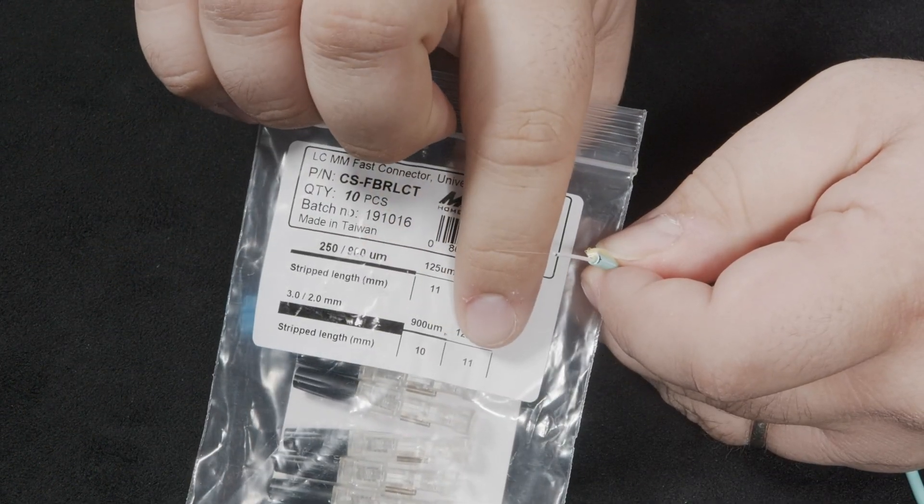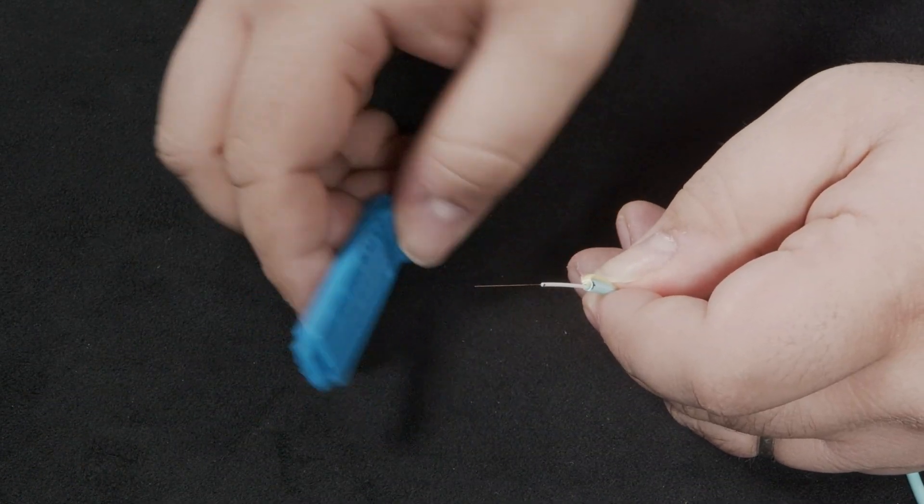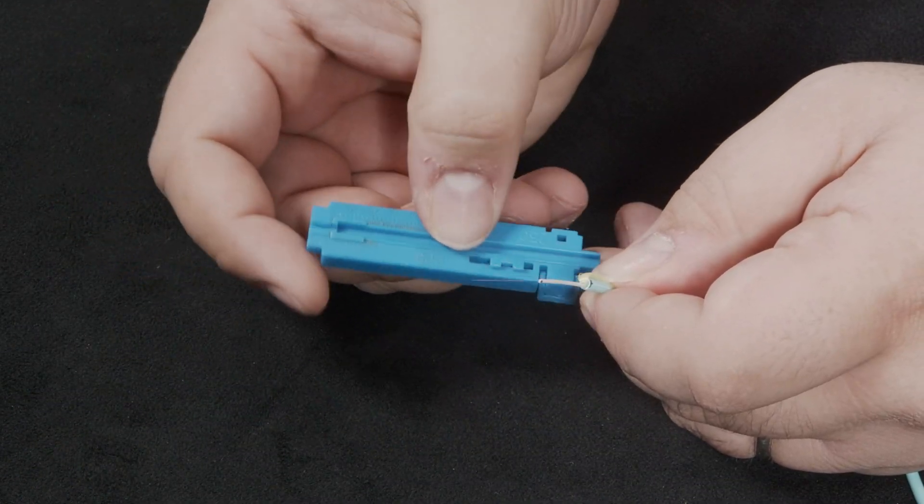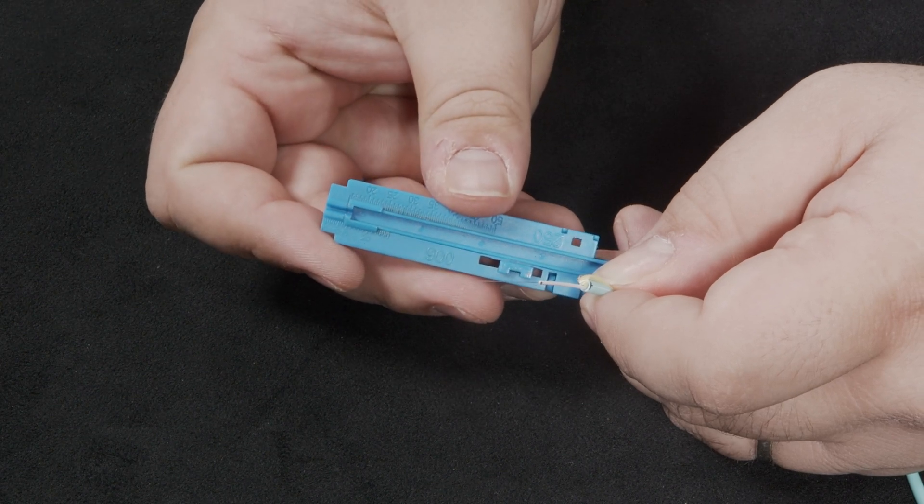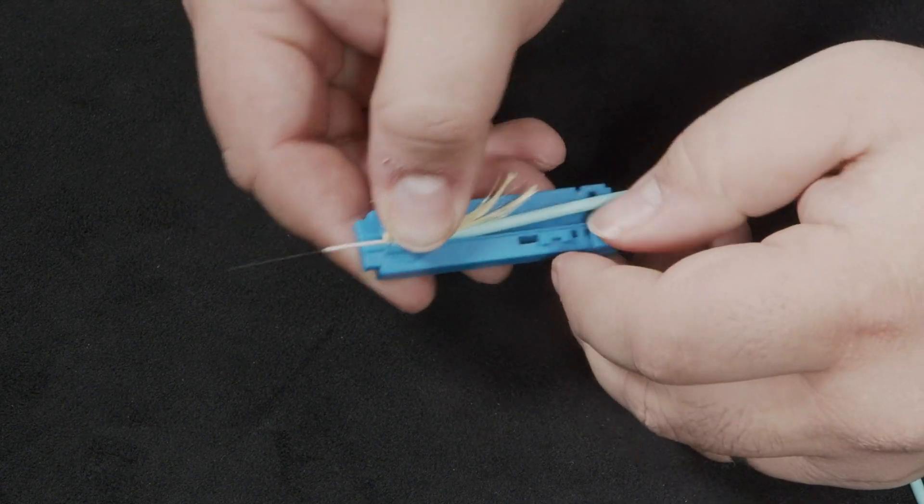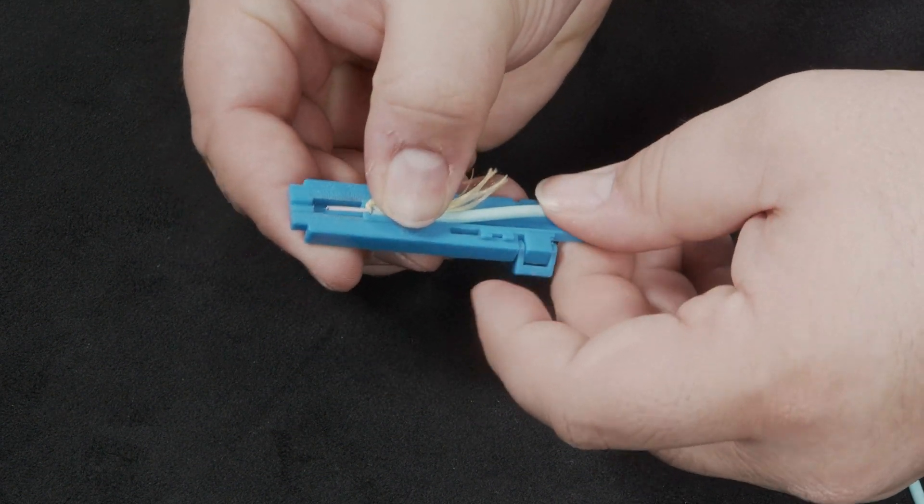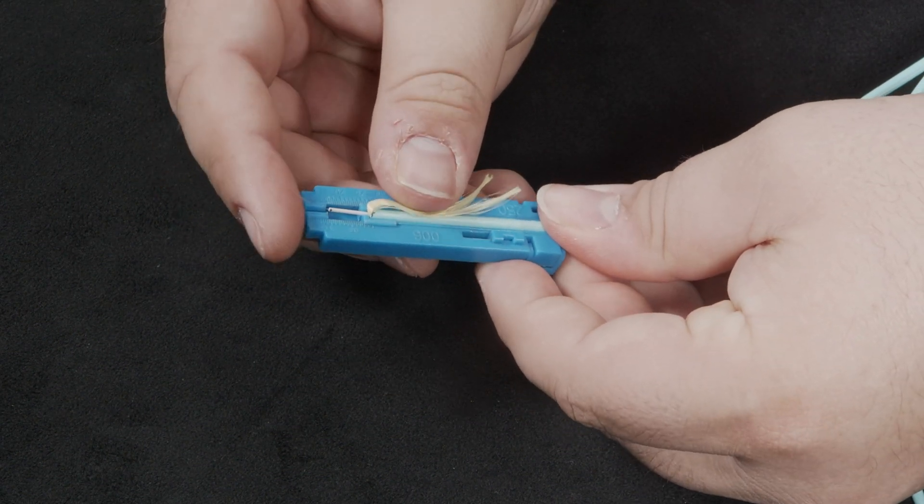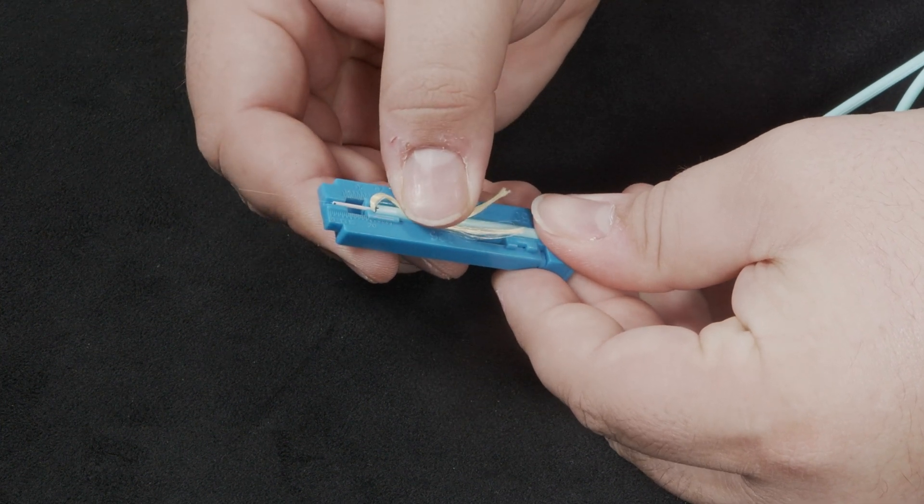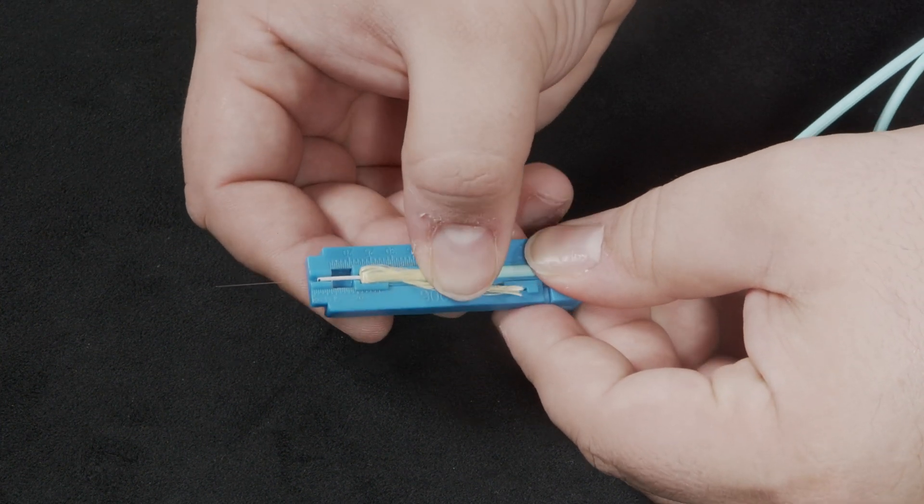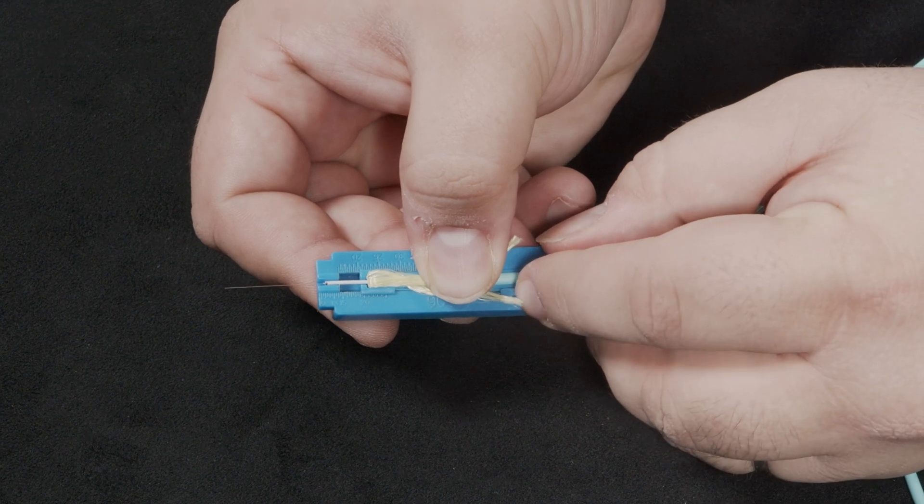Using the diagram for the last measurement we will now take our fiber and place it in the guide. Using the sliding mechanism align the inner shielding with the correct measurement. In this case the 11 millimeter mark. And make sure the lock is set.